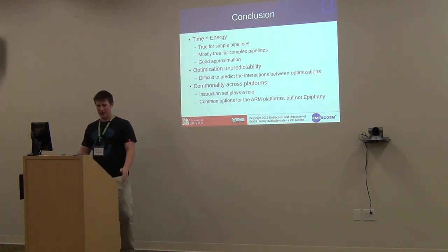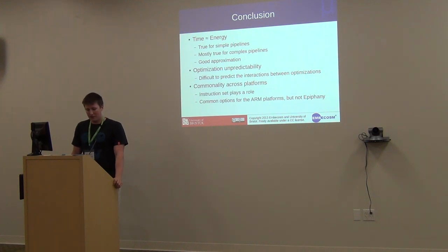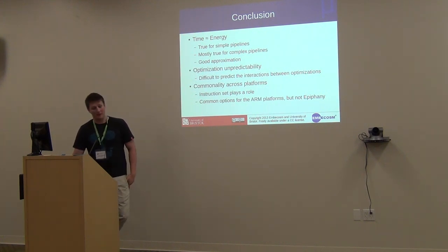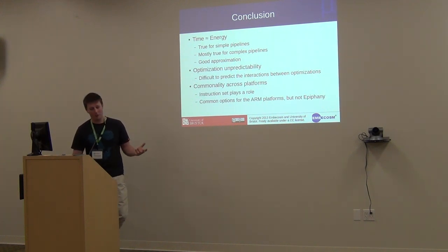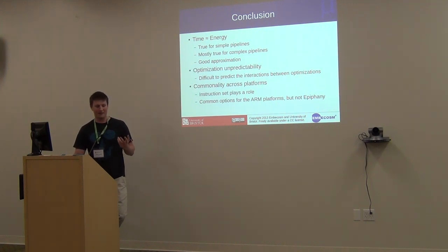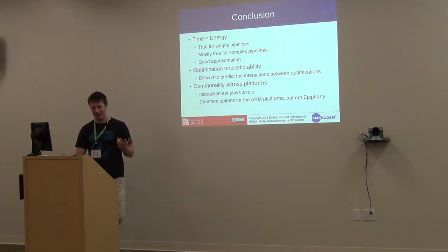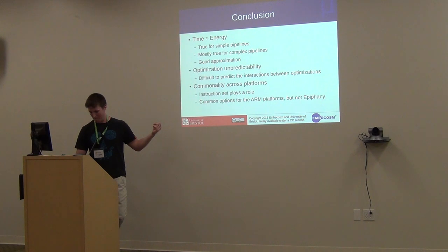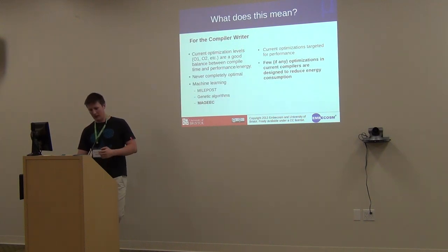In conclusion: for simple pipelines, you can just optimise for time. It's a good first step for complex pipelines too, but if you want that last 20%, you'll have to enumerate optimisations somehow, or write specific optimisations targeting energy. It's very difficult to predict how optimisations will interact with each other. This is another reason for running many, many tests. You see some commonalities across platforms and some common options for benchmarks.